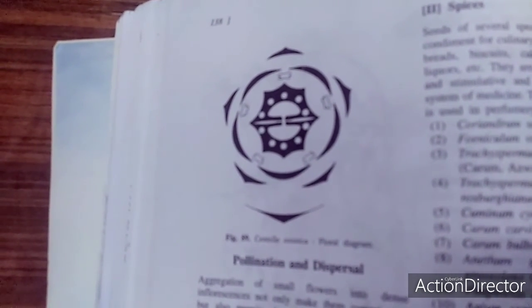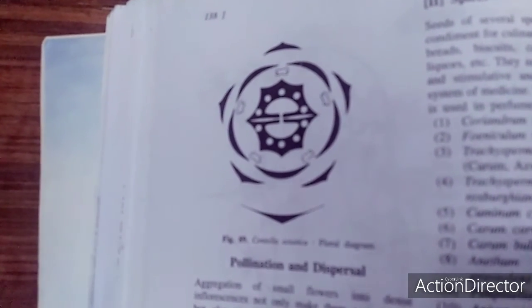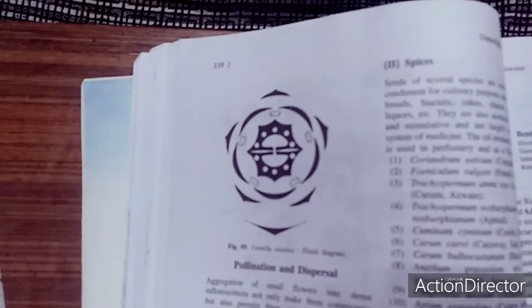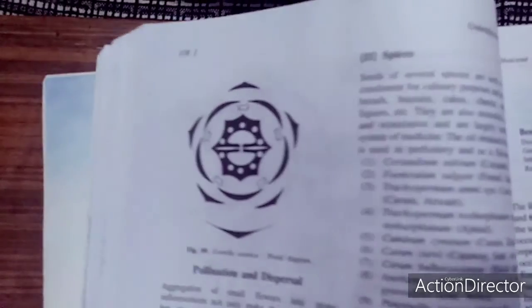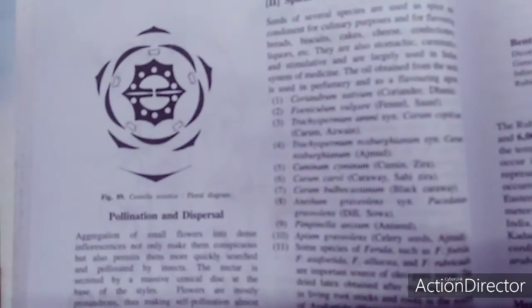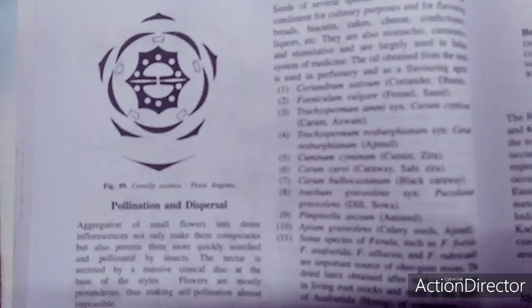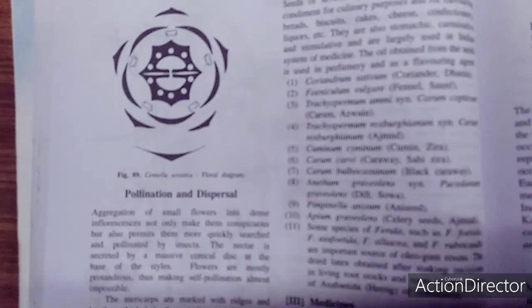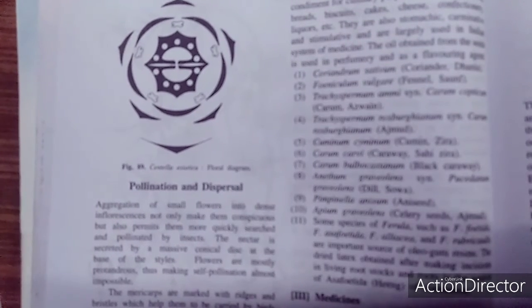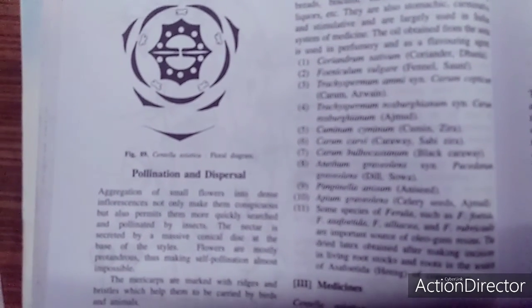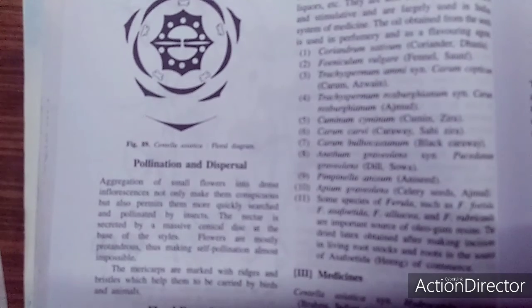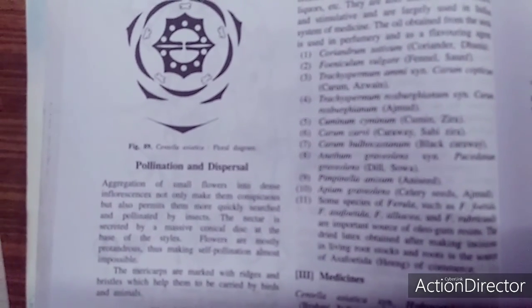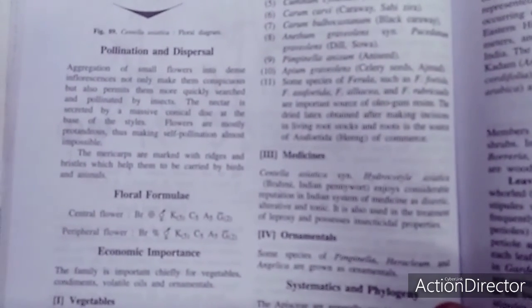This family is recognized as a vegetable family—like the carrot—and also for spices. This family includes Coriandrum sativum, Foeniculum vulgare, Trachyspermum ammi (ajwain), Trachyspermum roxburghianum, Cuminum cyminum, Carum carvi, Carum bulbocastanum, Anethum, and Pimpinella.